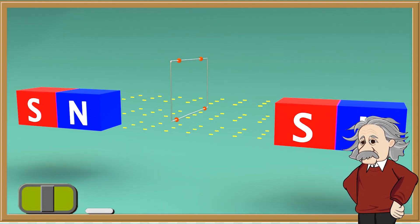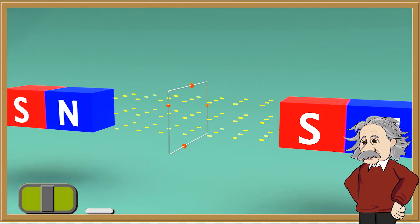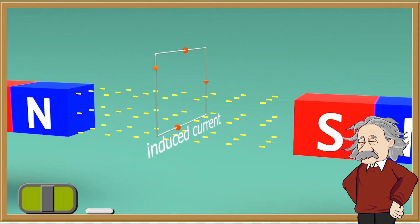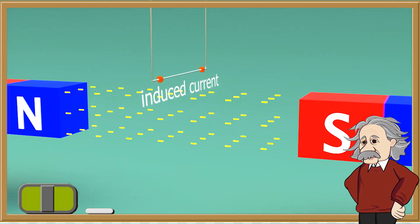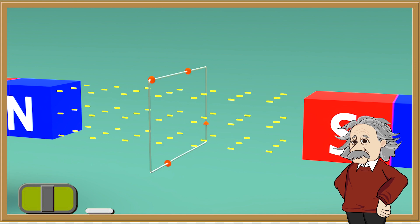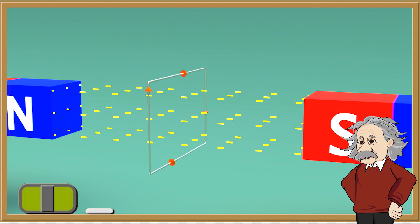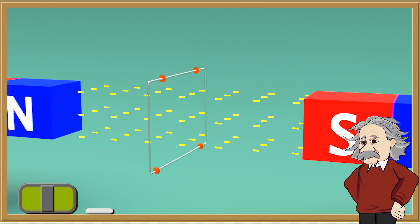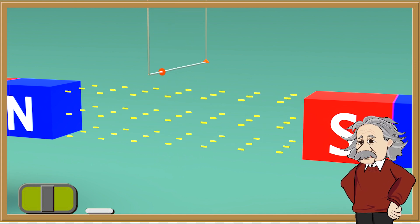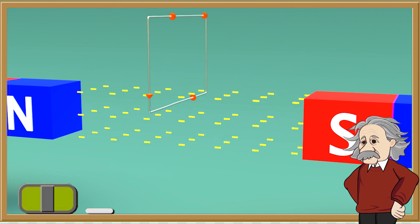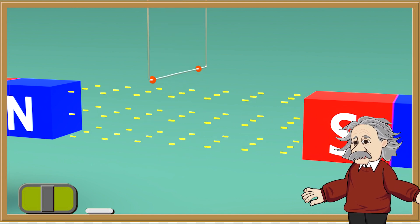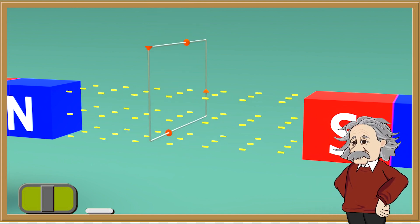This potential difference effect is called induced potential. If we have a complete circuit, then in this circuit we induce a current. This effect is called the generator effect. Like in the wire example, the direction of the current changes when the direction of movement changes, and if the movement of the circuit stops, then the current also stops.